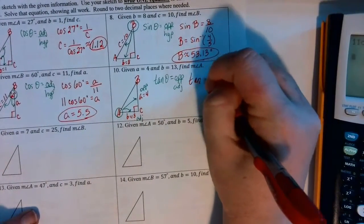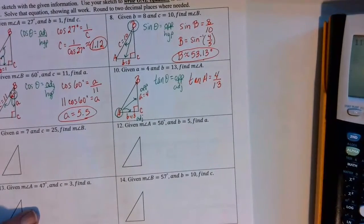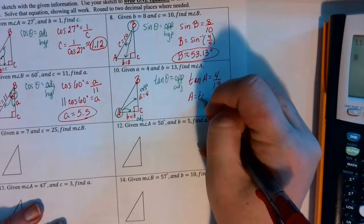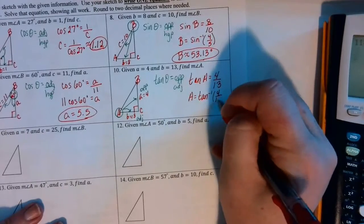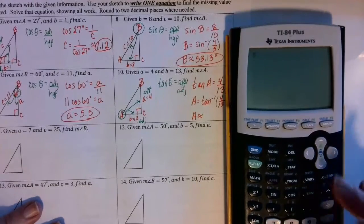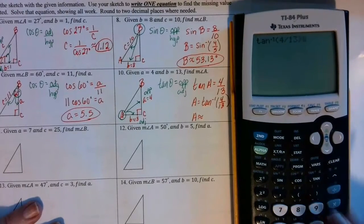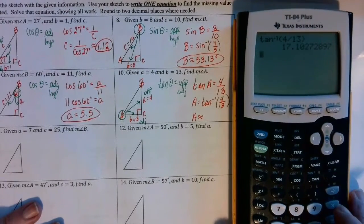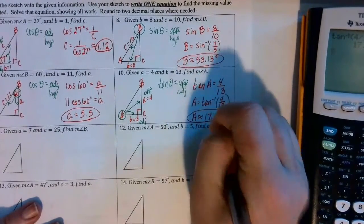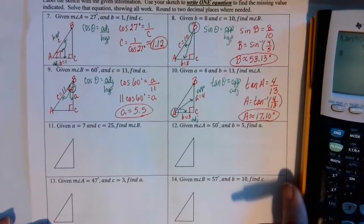The tangent of angle A equals 4 over 13 (opposite over adjacent). We take the inverse tangent of both sides, so angle A equals the arctan of 4/13. In the calculator, in degree mode, we press second then tangent to get arctan, then 4 divided by 13, rounded to two decimal places, is 17.10 degrees. Don't forget your degree symbol when finding angle measures so they're not confused with gradient measures.